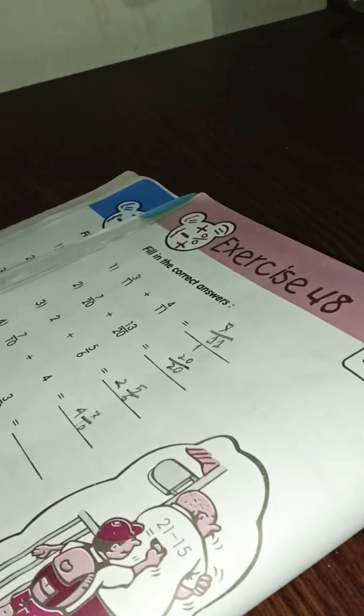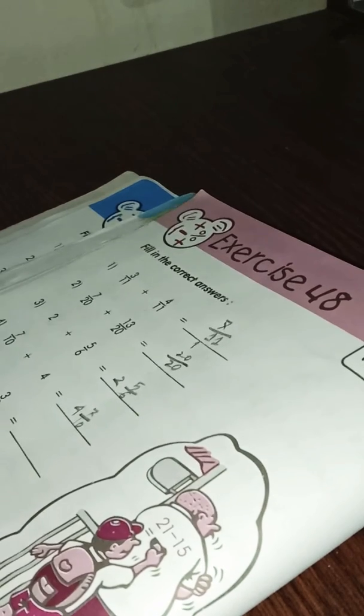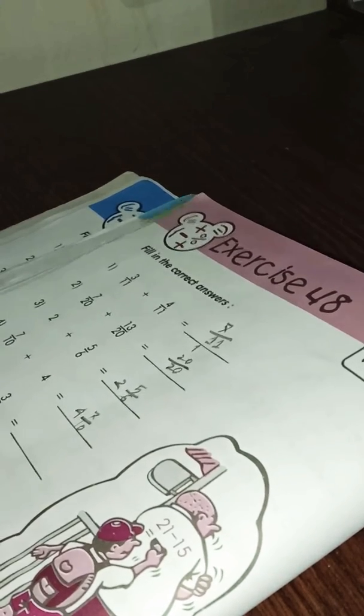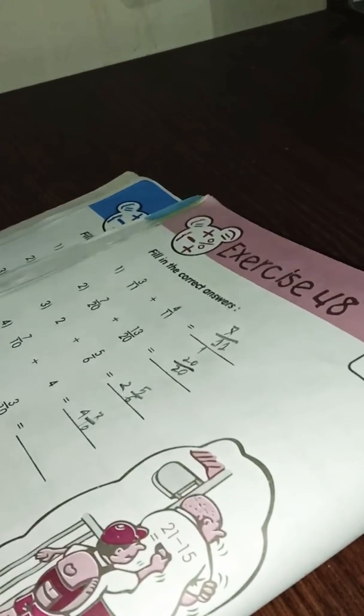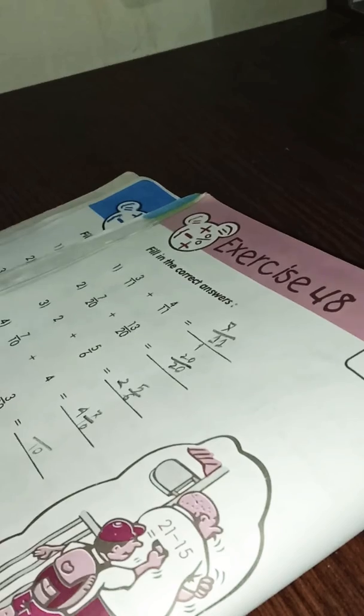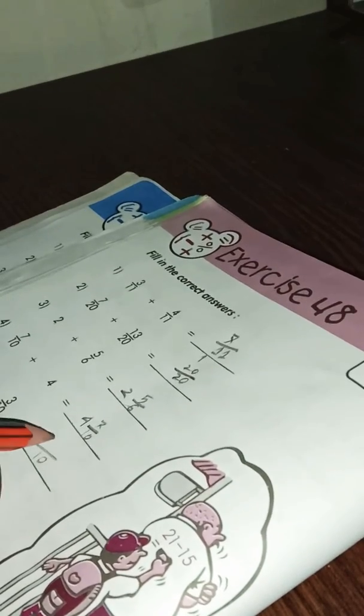make the denominator the same as 10. So we will multiply by 2, multiply by 2. 2 to the 4, 5 to the 10 is similar. So we will now write 10 and 2 to the 4 plus 3 equals 7.